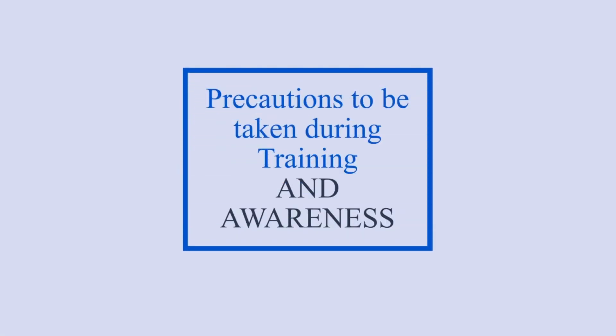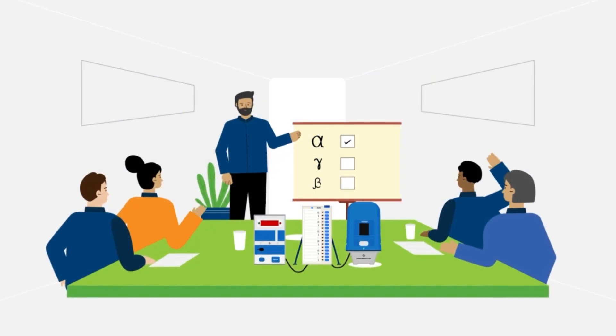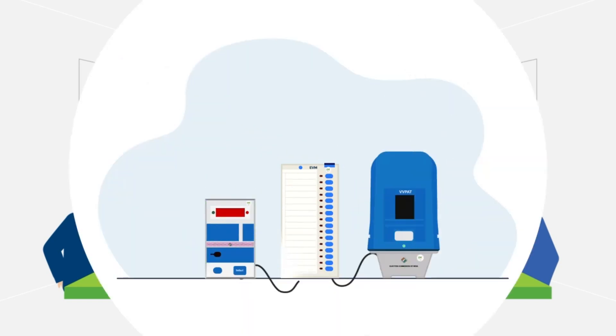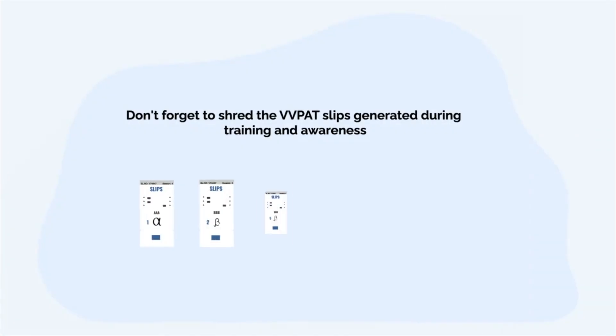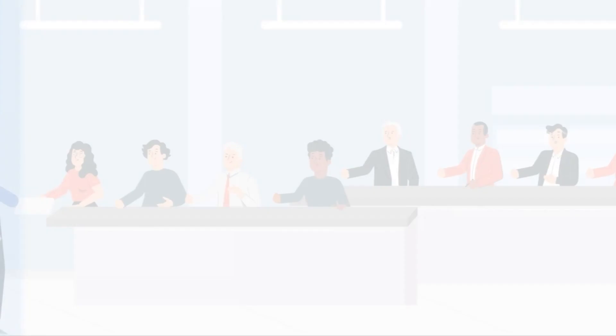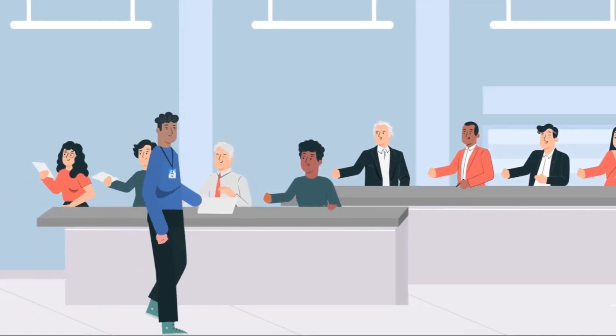Precautions to be taken during training and awareness: Don't use real election symbols during training and awareness. Don't forget to use only FLC OK machines. Don't forget to shred the VVPAT slips generated during training and awareness.